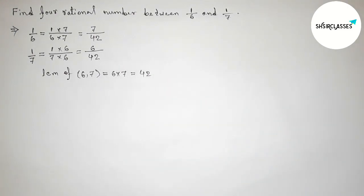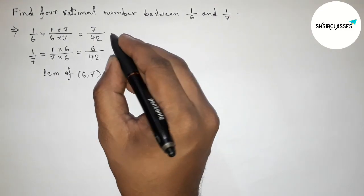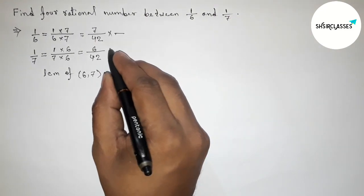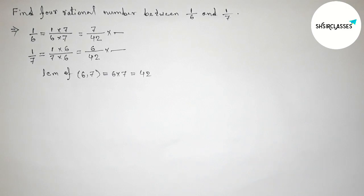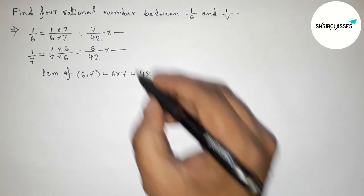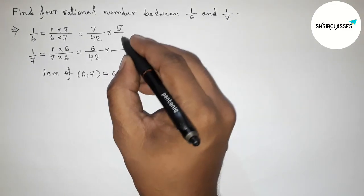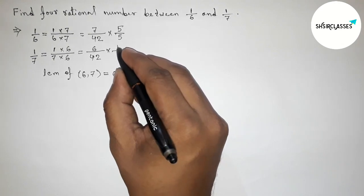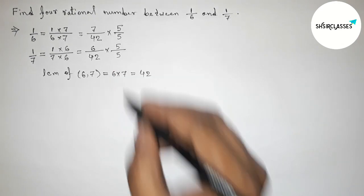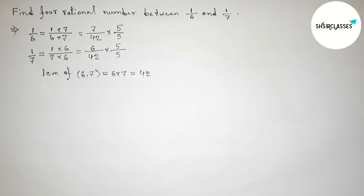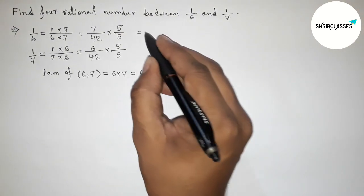So here both the denominators are 42 and equal. So now we have to find four rational numbers, so again we have to multiply both rational numbers by a number up and down, so taking here 5 and here also 5.